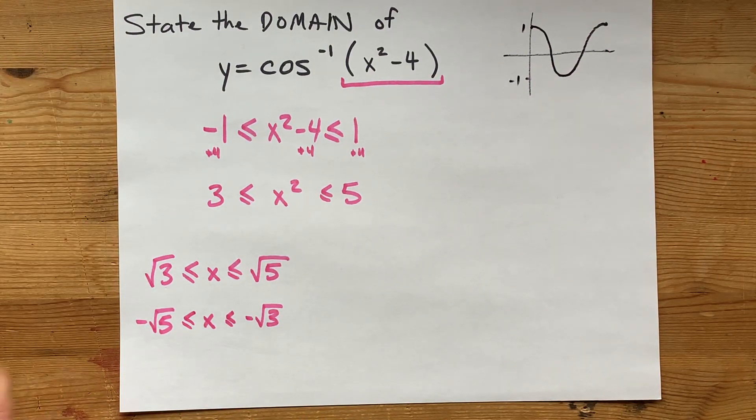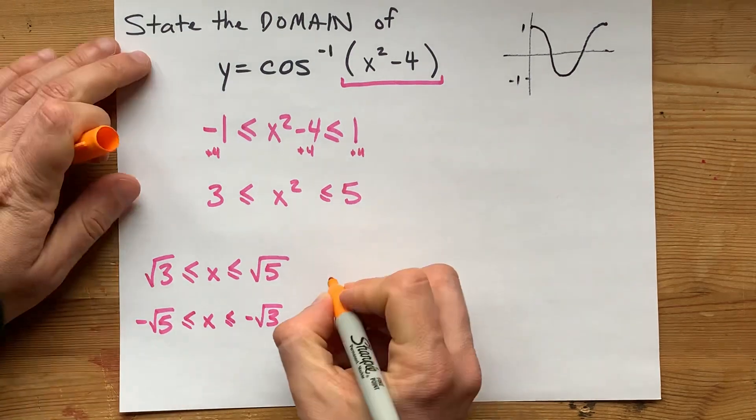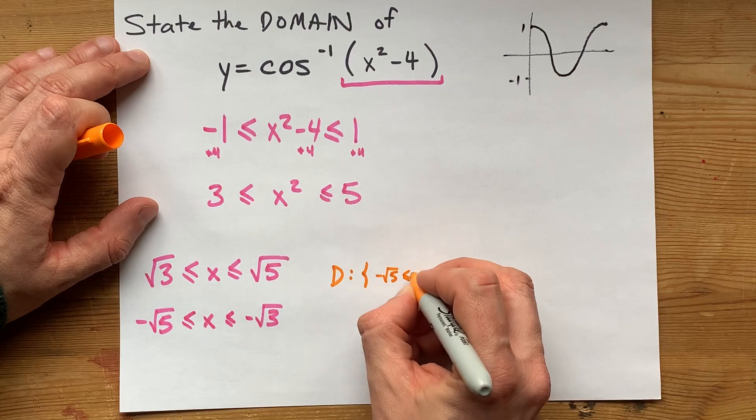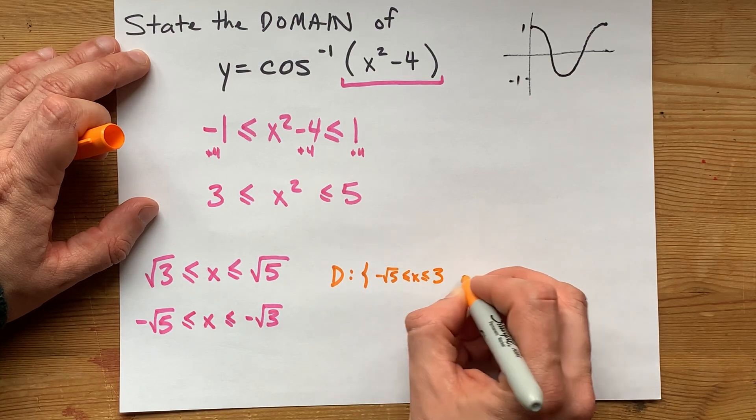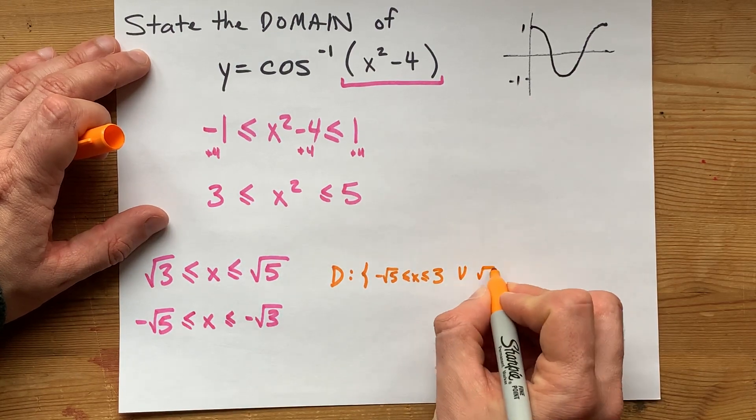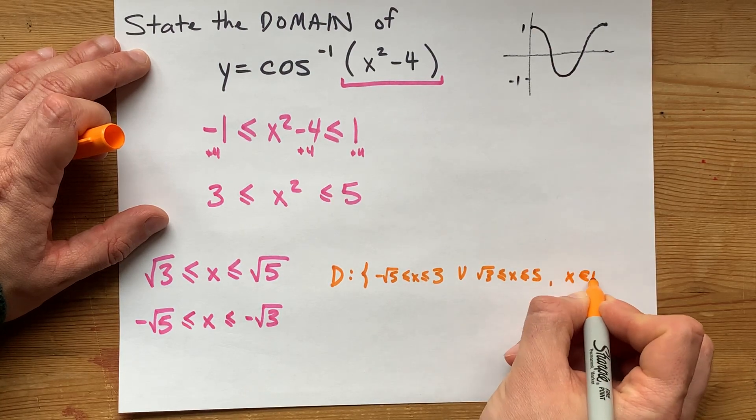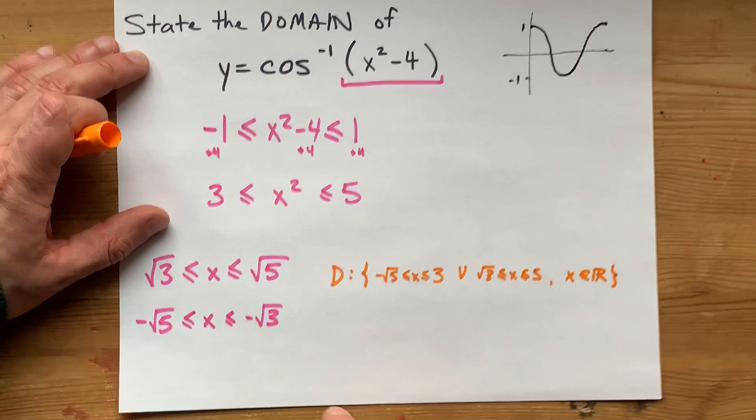So, if I had to write this all at once, I would say that the domain is negative root 5 less than or equal to x less than or equal to negative root 3 union root 3 less than or equal to x less than or equal to root 5, as well as pointing out that x has to be a real number.